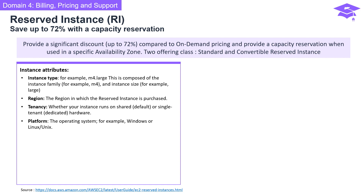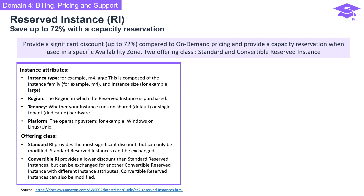Region is the geographical location where the reserved instance is purchased. Tenancy refers to whether your instance runs on shared (default) or single-tenant (dedicated) hardware. Platform is the operating system, for example Windows or Linux/Unix. If your computing needs change, you might be able to modify or exchange your reserved instance, depending on the offering class.